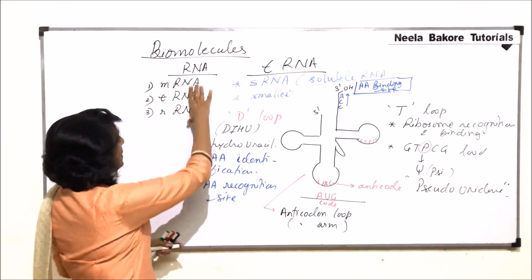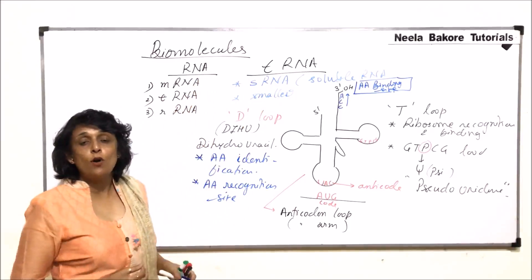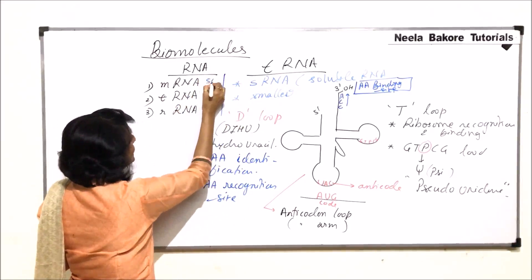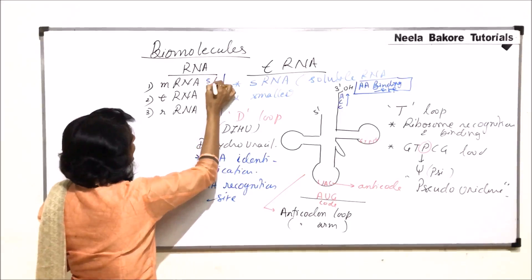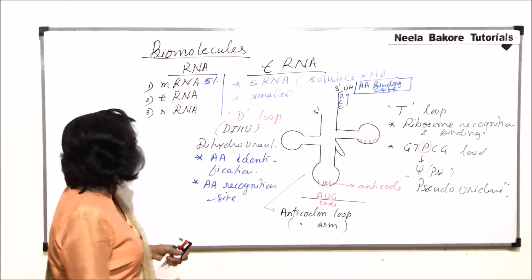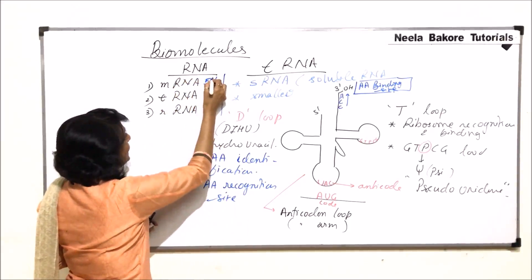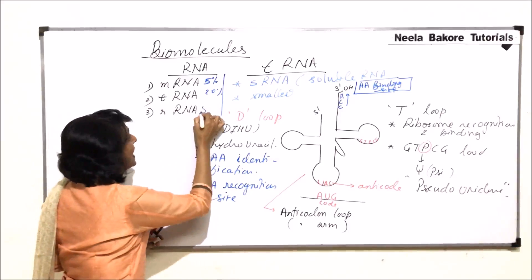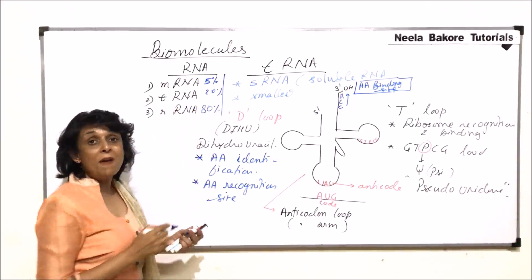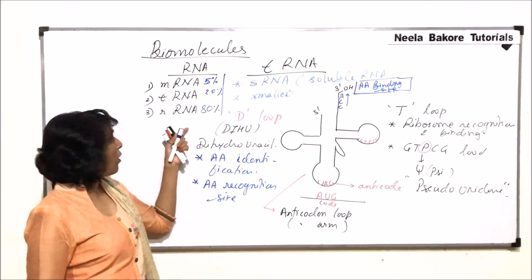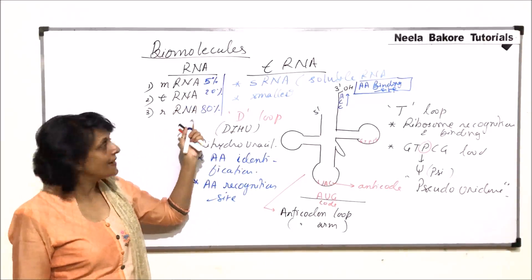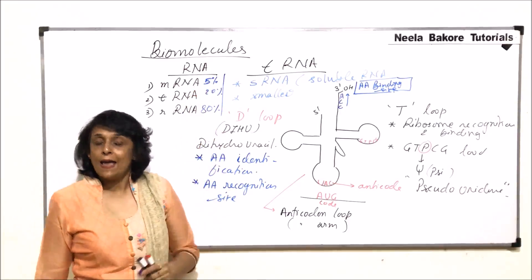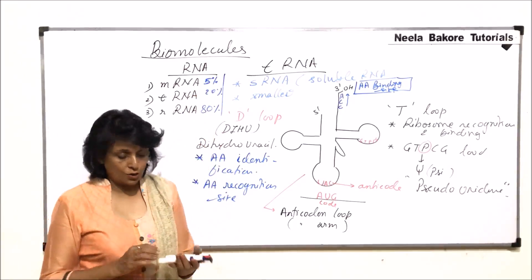If we compare the percentage or how much of which RNA is present we can write that mRNA is approximately 5%. tRNA is about 20%. And rRNA is 80%. So maximum number or maximum percentage of RNA is of rRNA. So this is the percentage distribution.